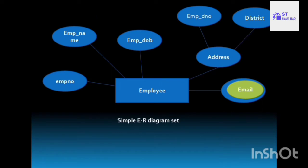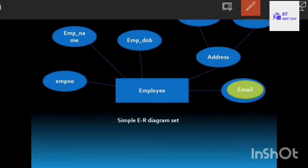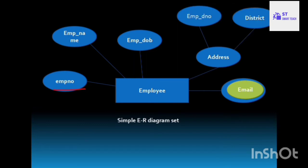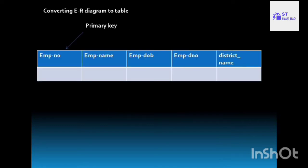Let's see an example. This is a strong entity because it contains a primary key. Employee number is the primary key, which uniquely identifies each employee. The attributes are: employee number, employee name, employee date of birth, address, door number, district, and email.